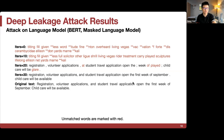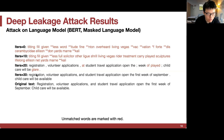For NLP models, we tried deep leakage on BERT. At iteration zero, the sentence is completely random. After 20 iterations it begins to make sense. After 30 iterations it is very similar to the original text from a NeurIPS website: 'Now registration, volunteer applications, and student travel application open the first week of September.' This shows it's possible to have deep leakage from NLP models as well.